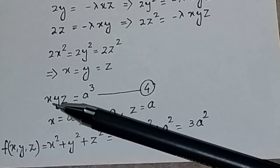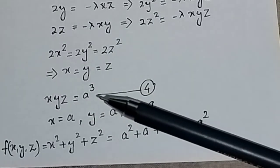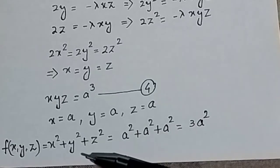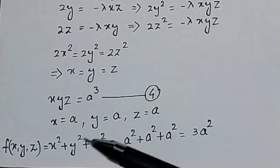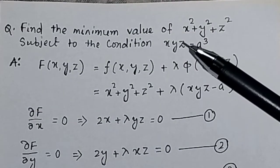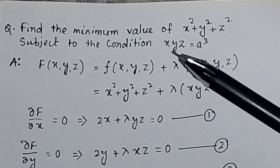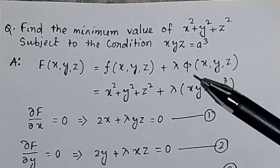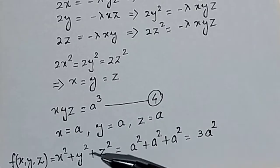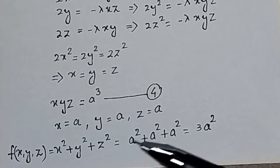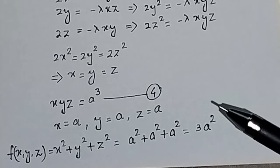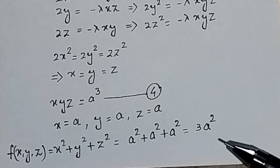So x = y = z = a. Substituting into the objective function f(x,y,z) = x² + y² + z² gives a² + a² + a² = 3a². Therefore, the minimum value of the function subject to the constraint is 3a².